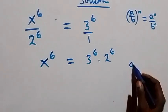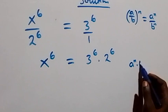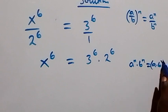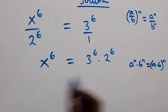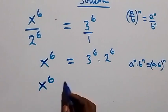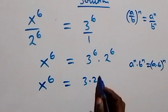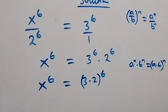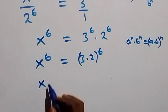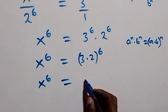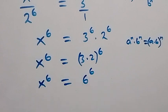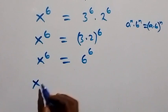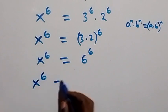When we have a raised to power n times b raised to power n, this is the same as (a times b) raised to power n. So we can rewrite this as x raised to power 6 equals (3 times 2) raised to power 6, which becomes x raised to power 6 equals 6 raised to power 6. Taking 6 raised to power 6 to the other side, we have x raised to power 6 minus 6 raised to power 6 equals 0.